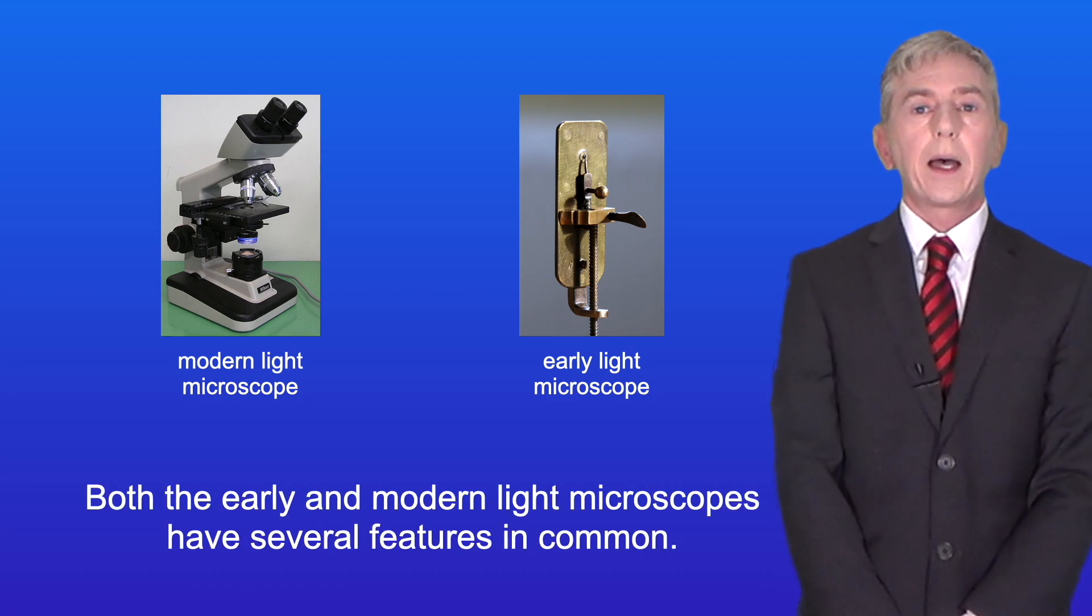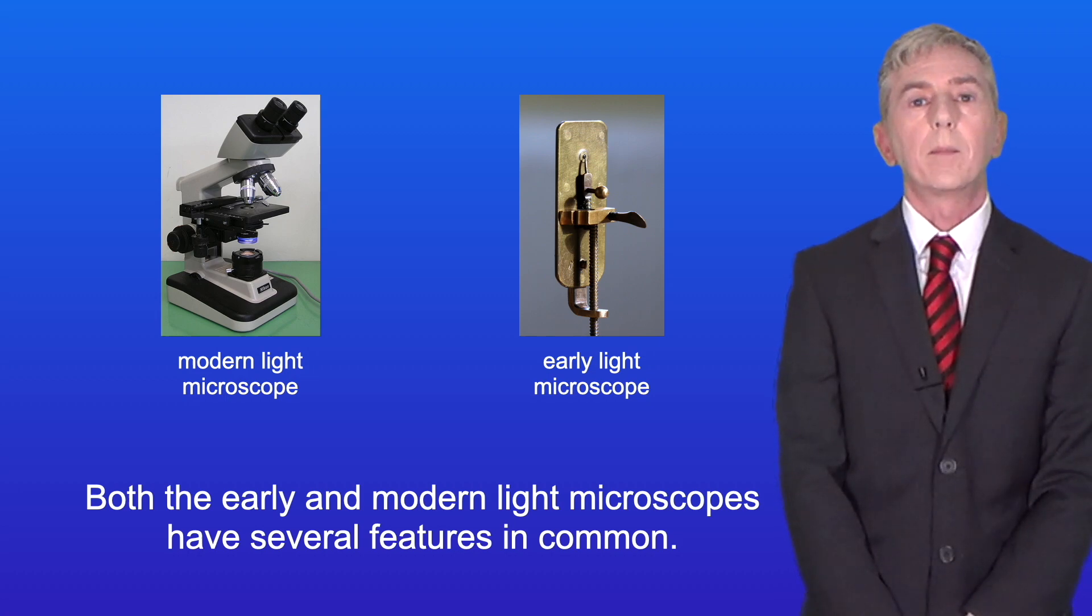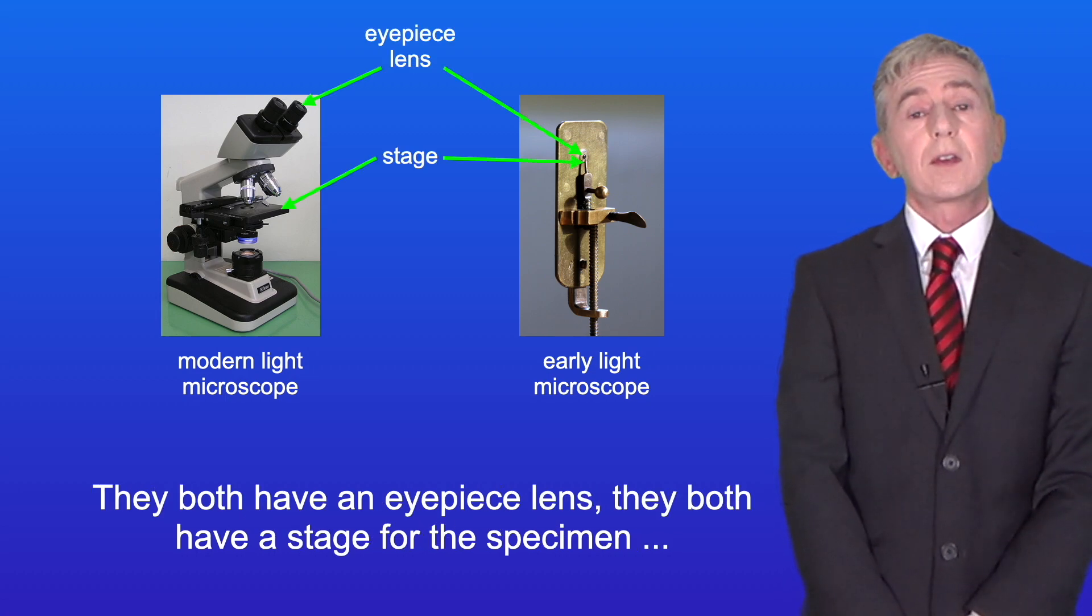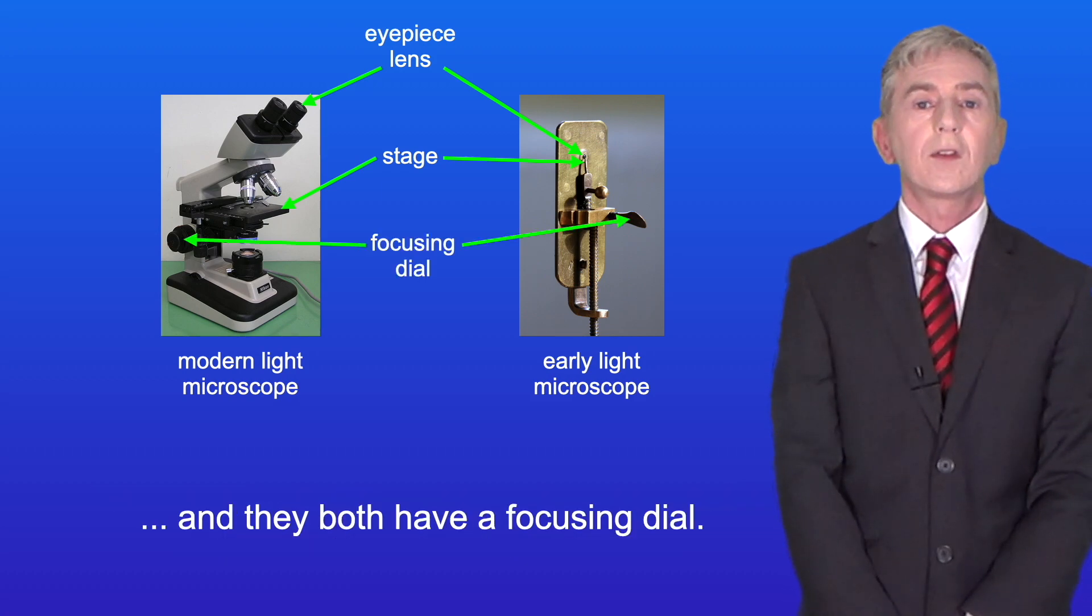Both the early and modern light microscopes have several features in common. They both have an eyepiece lens. They both have a stage for the specimen and they both have a focusing dial.